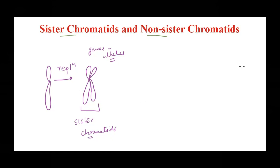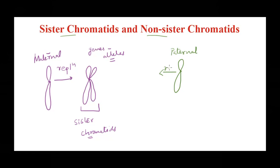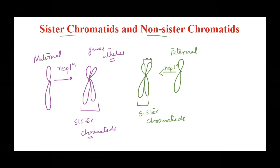For every chromosome we have a homologous pair. Let's label this as the maternal chromosome. For this chromosome there will be its homologous paternal chromosome — let's draw that. This paternal chromosome will also undergo replication to produce its copy, and these two duplicated strands we are again going to call sister chromatids, for the same reason: all the genes and alleles on both chromatids are exactly the same.